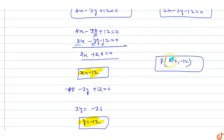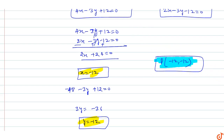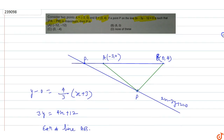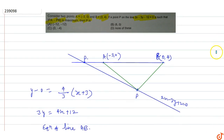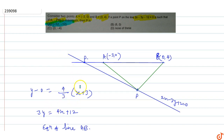So the coordinates of point P are minus 12 comma minus 12. The question asks for point P on line 2x minus 3y minus 12 equal to zero such that mod of PA minus PB is maximum. That point P is minus 12 comma minus 12, so option A is the correct answer. Point P lies on the intersection of the two lines, giving coordinates minus 12 comma minus 12.